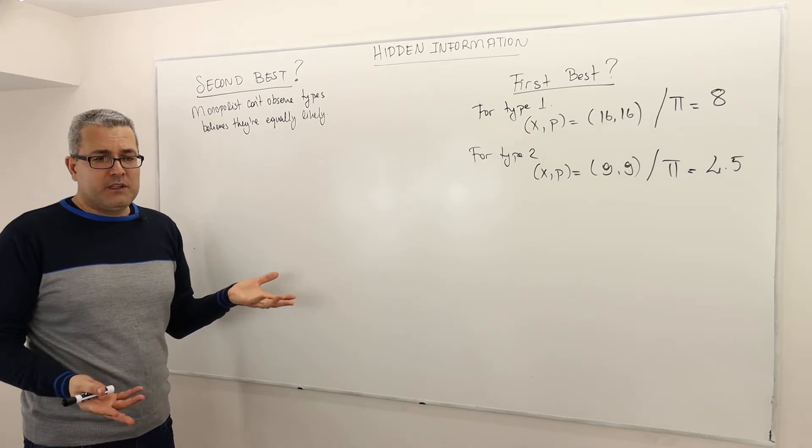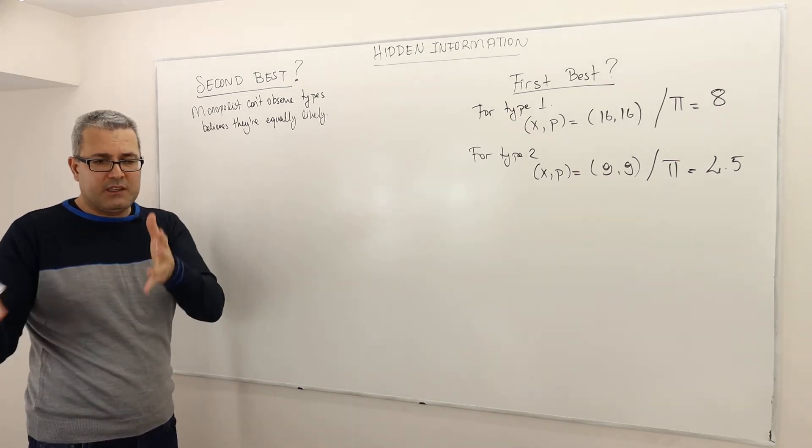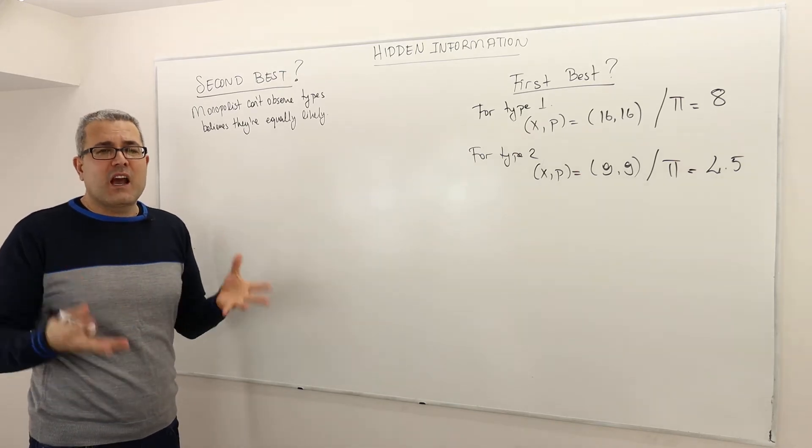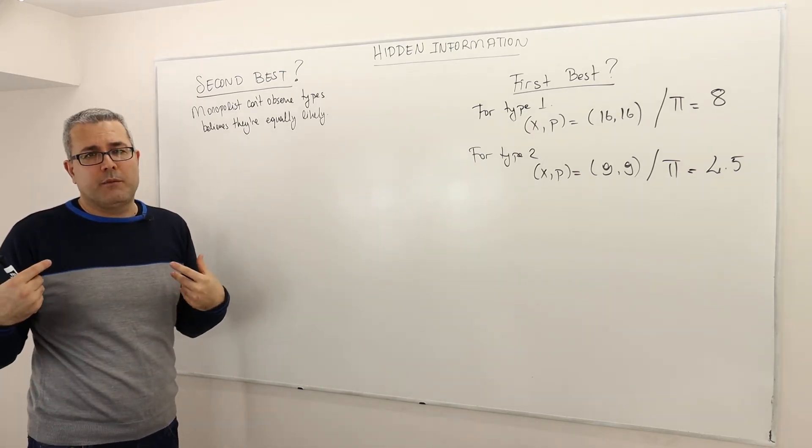And then the monopolist says, this is package one, here's the price. This is package two, here is the price. Which one do you want to pick? And then the customer is going to pick one of them.